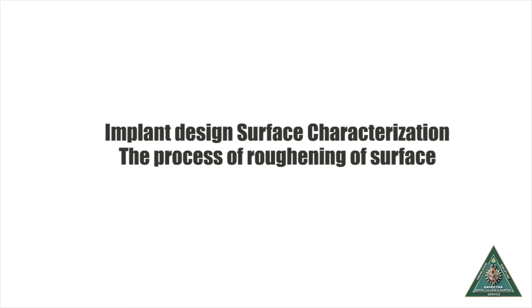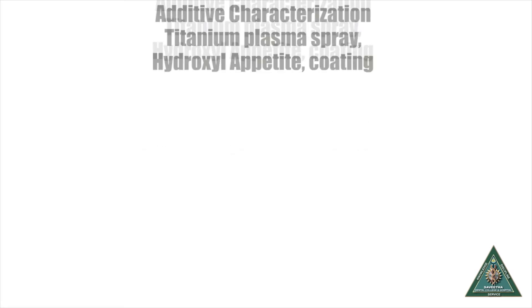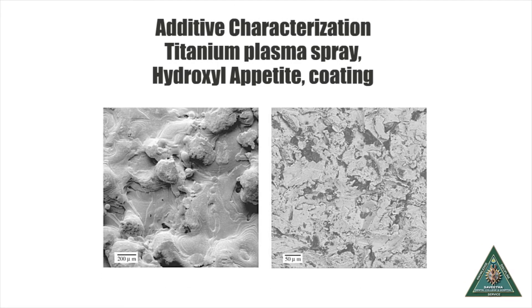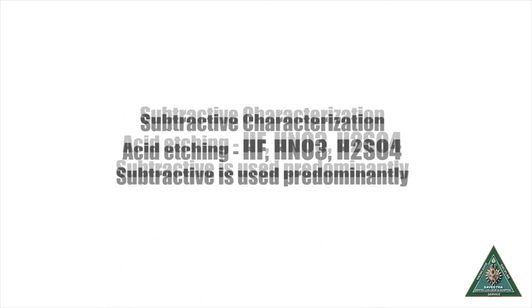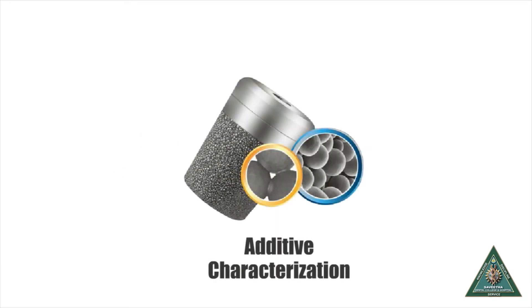There are two types of surface characterization: additive and subtractive. Additive characterization is done by spraying titanium plasma spray or hydroxyapatite coating. Subtractive characterization is done through acid etching with hydrofluoric acid, nitric acid, or sulfuric acid.